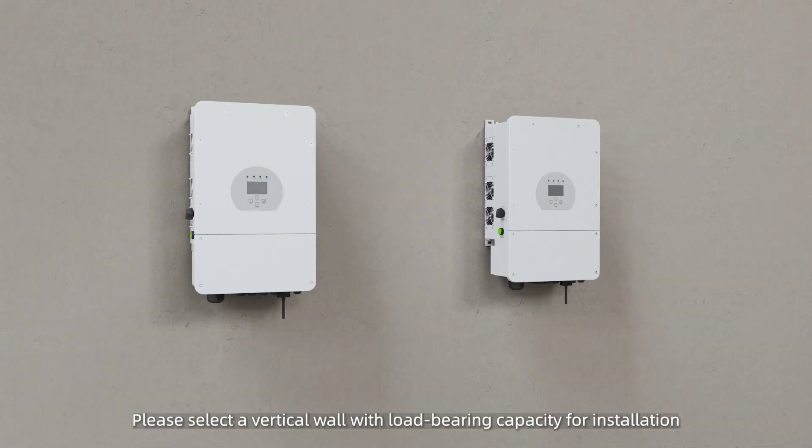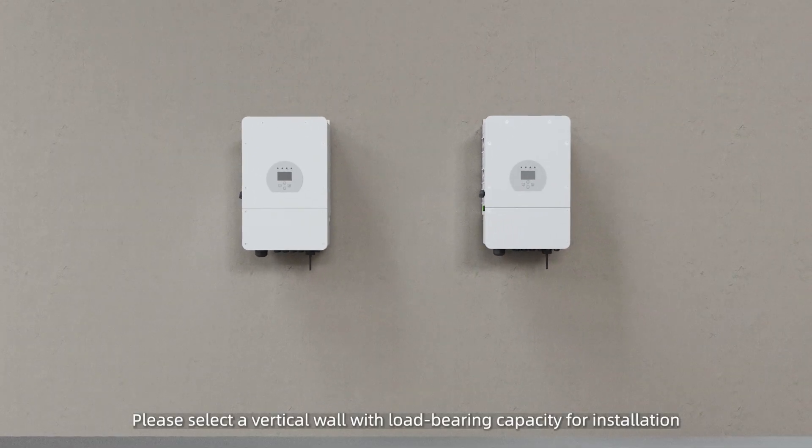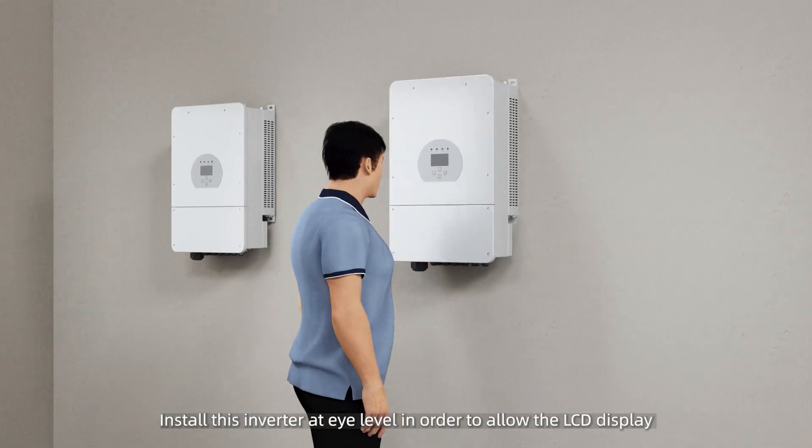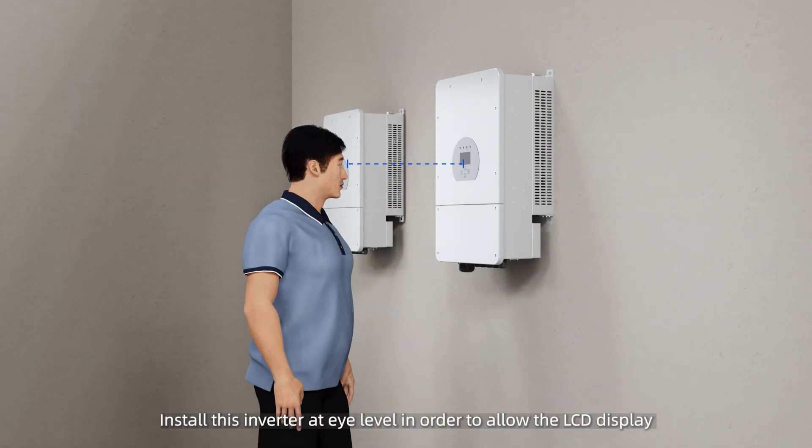Please select a vertical wall with load bearing capacity for installation. Make sure that there is more than 500mm of heat dissipation space around the product. Install this inverter at eye level in order to allow the LCD display to be read at all times.